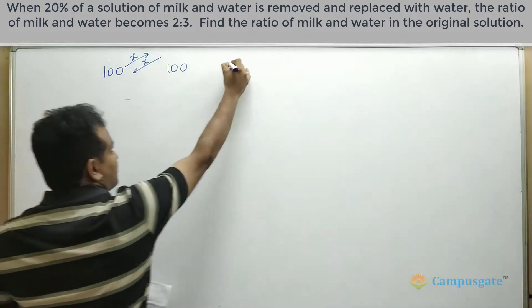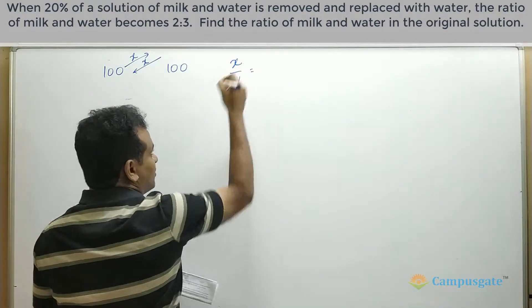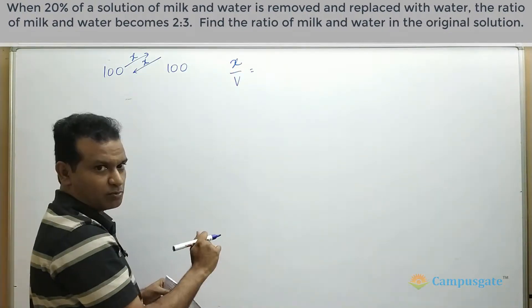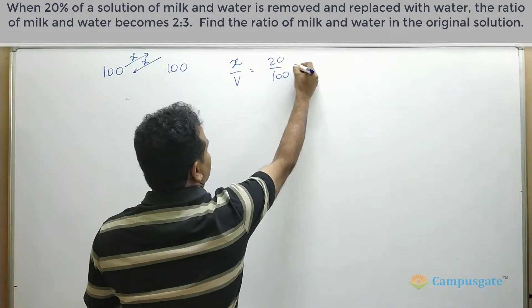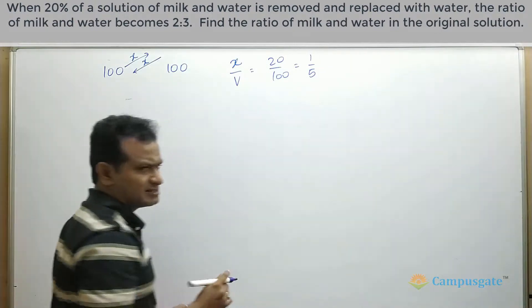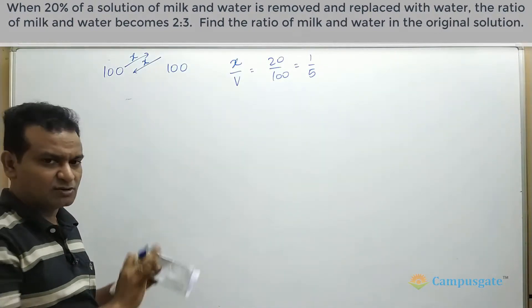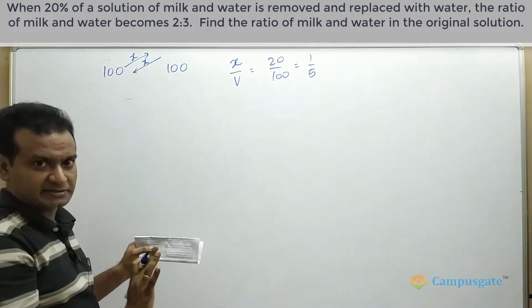So therefore, x by v that is what we are going to put in our formula. x by v in the formula will become 20 by 100. Or if you remember the ratio of 20%, you can simply put 1 by 5 over there. That is the only thing you need to make here.